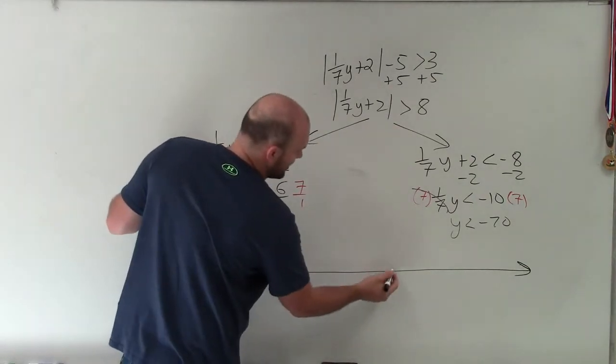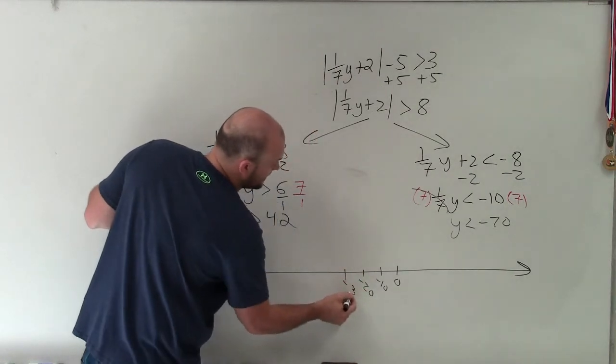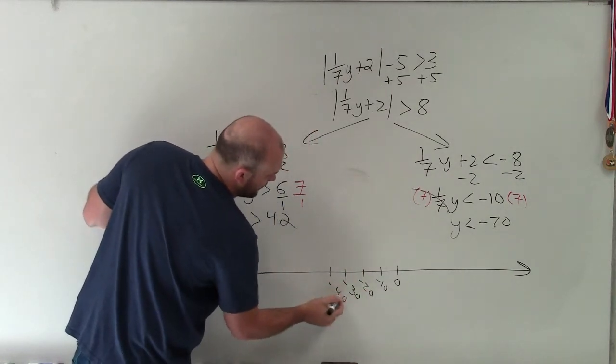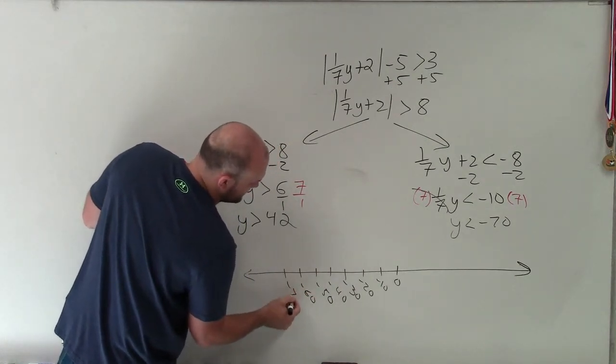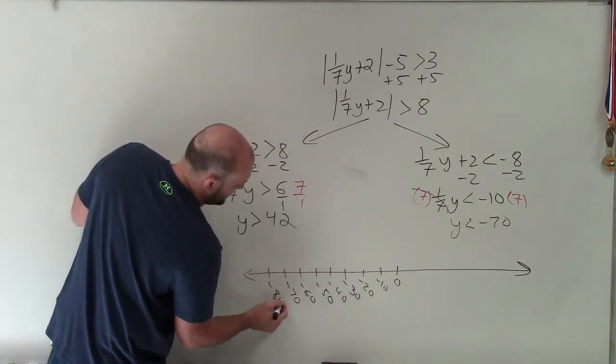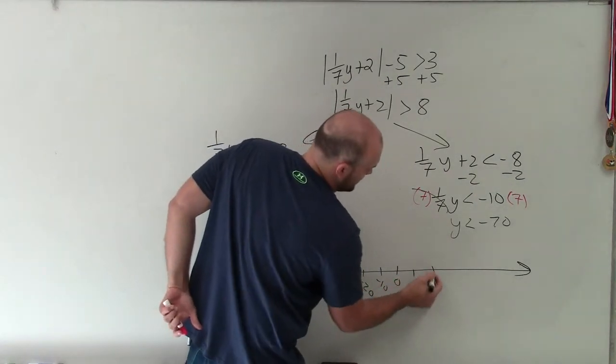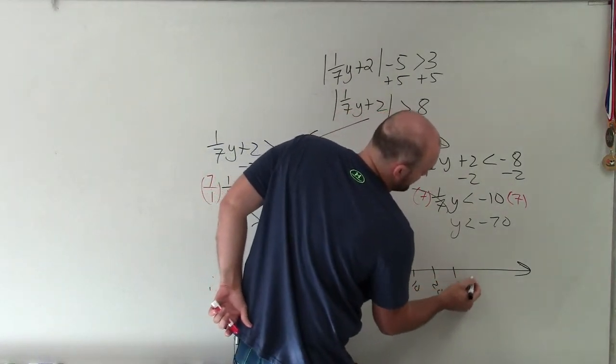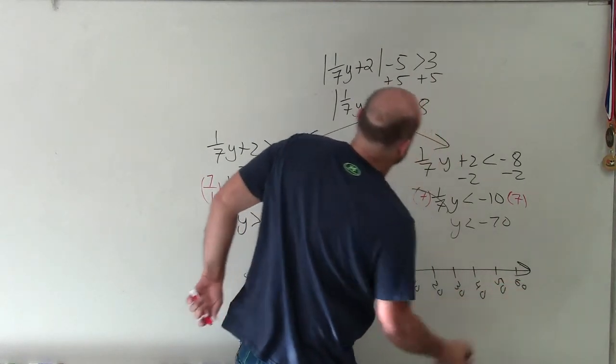So I'll even start at 0, and I'll just say negative 10, negative 20, negative 30, negative 40, negative 50, negative 60, negative 70, negative 80, negative 90. And this will be 10, 20, 30, 40, 50, 60.